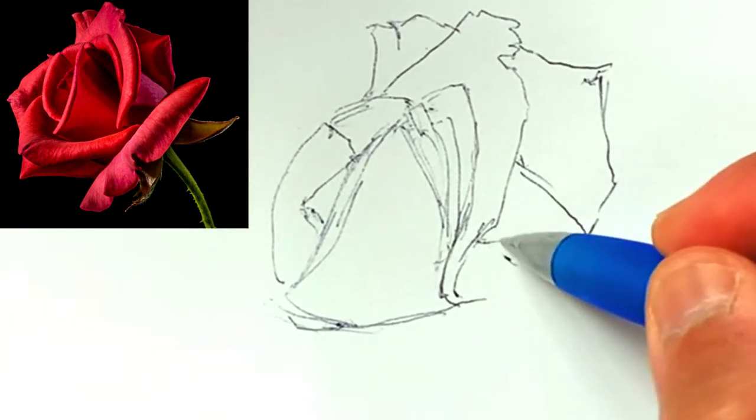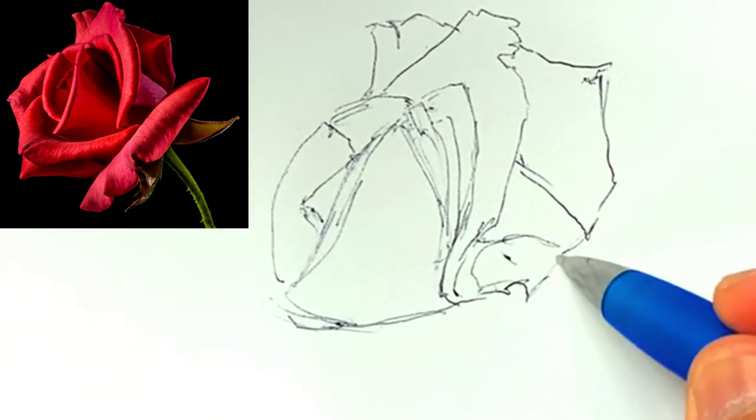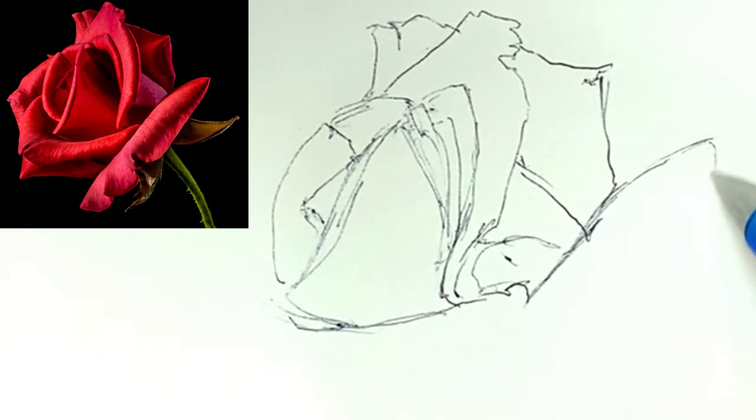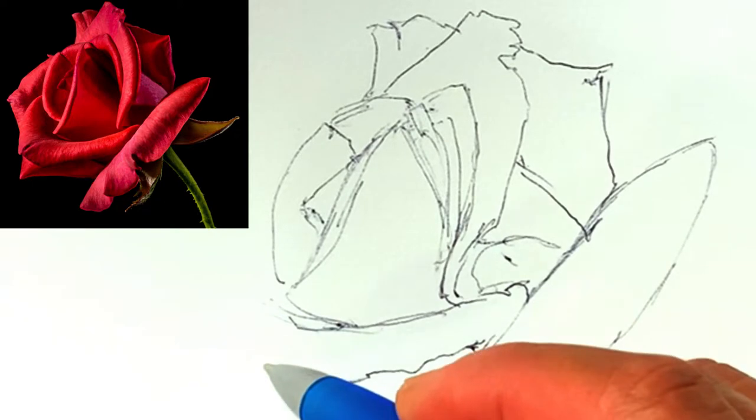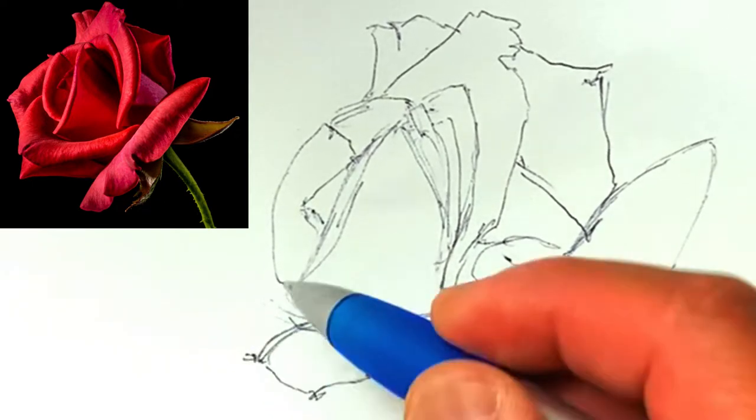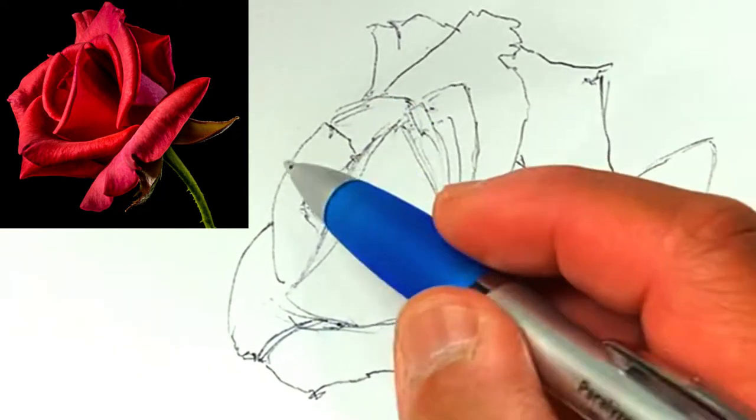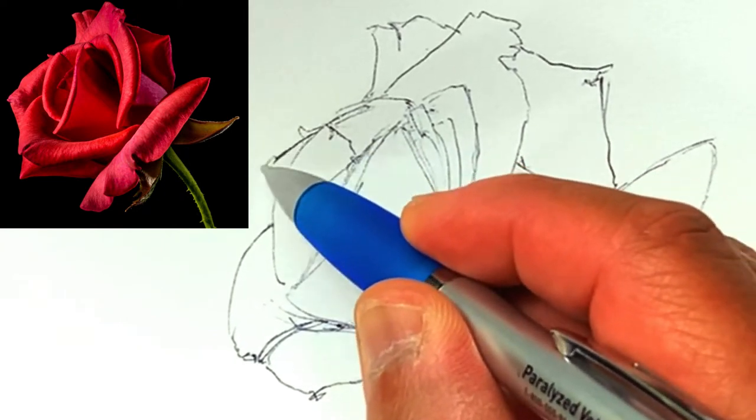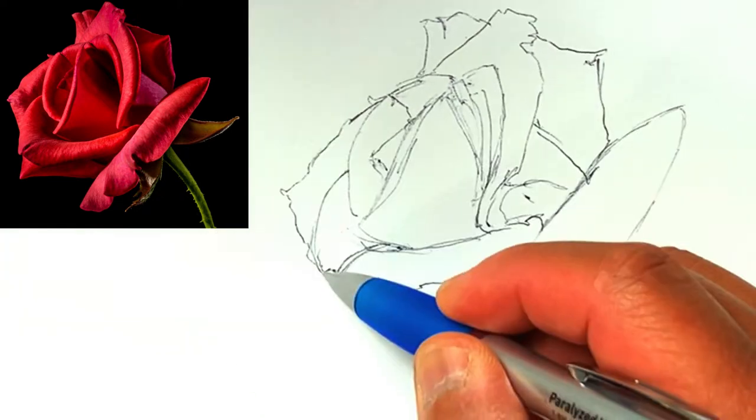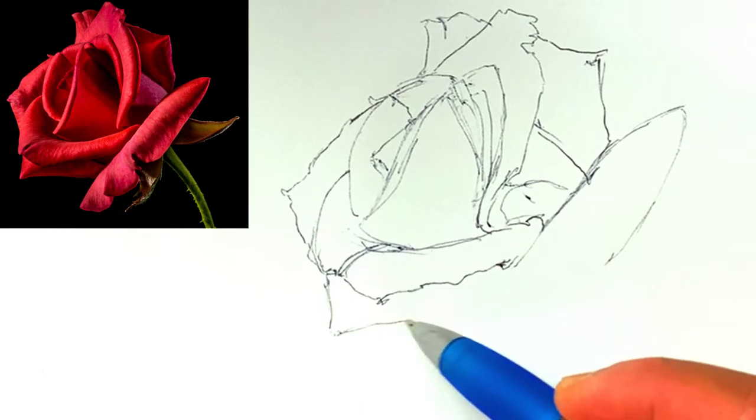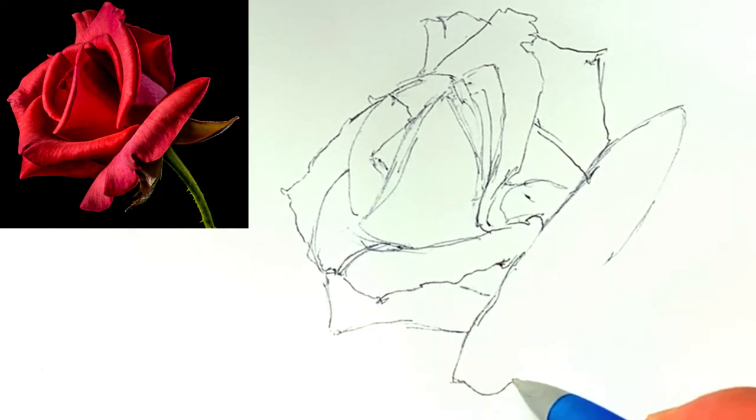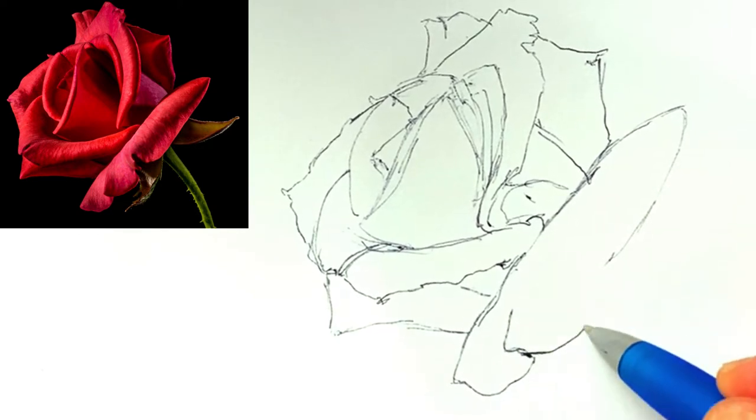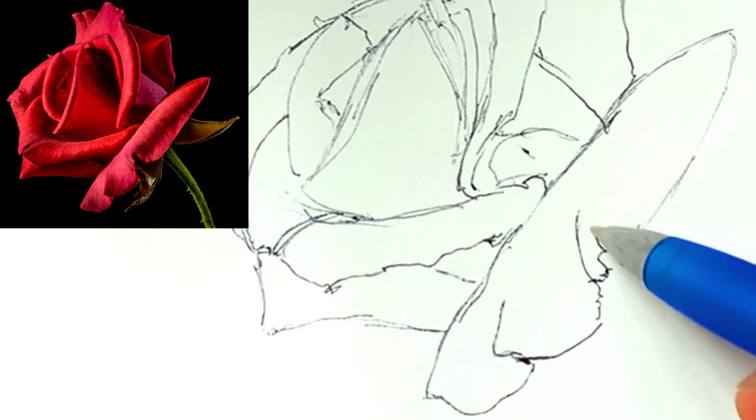As usual, I'm just going through marking down the basic shapes first. I start from the beginning, from the center area usually, and I'll just work my way outward, always looking at what I've already drawn, trying to compare the shape, the size, the position, the angle, like this petal here for example.